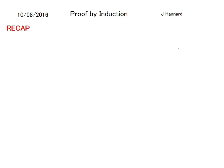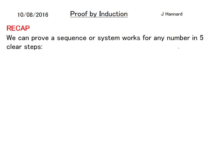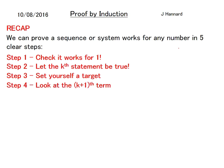So a little recap of the steps. You might want to make a note of this. We can prove a sequence or system works for any number in 5 clear steps. Check it works for 1. Let the kth statement be true. Set yourself a target. Look at the k plus 1 term. Tell the world you've done it. So there are your 5 steps, very clear. And once you've done 4 or 5 of these, you get a lot more confident and it's not too scary once you've done a few.